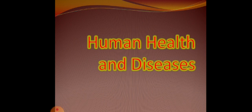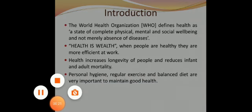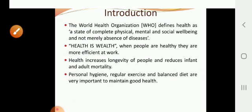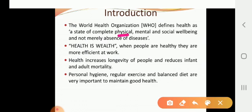Now we are going to learn about human health and diseases of Unit 3, Chapter 7. In this lesson we are going to discuss what is meant by health and what is meant by disease. The World Health Organization (WHO) defines health as a state of complete physical, mental and social well-being, and not merely the absence of diseases.